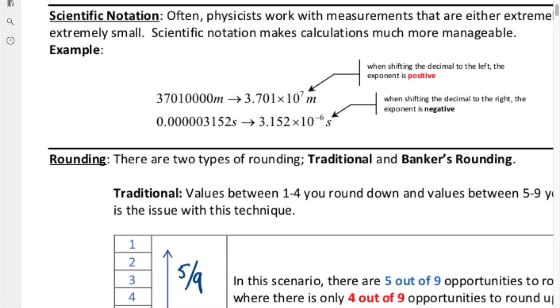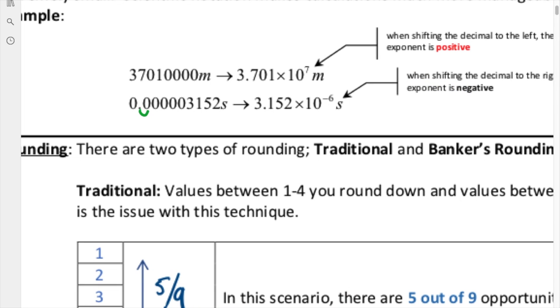When we have a small number, we have to shift the decimal place this time to the right: 1, 2, 3, 4, 5, 6 times. When we do that, we get a negative 6.